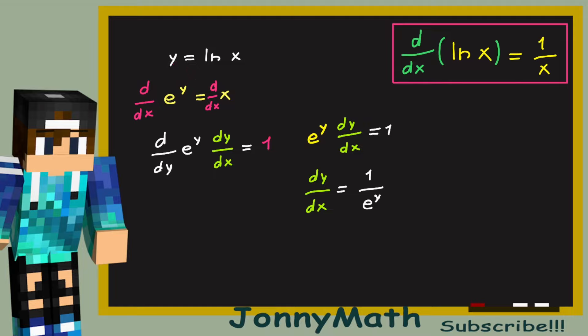What was y equal to? Well, y equals the natural log of x. So we know that dy over dx equals 1 over e to the natural log of x. But now, e to the ln of x simply equals x, because it is the function of the inverse function.